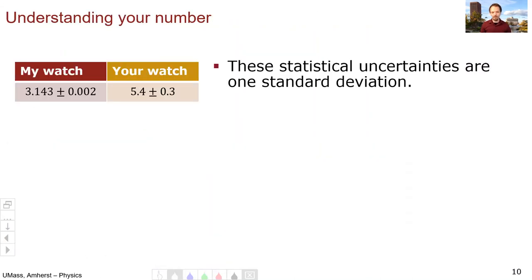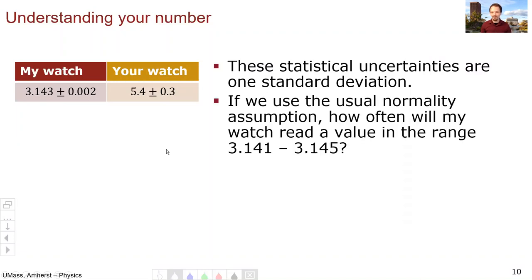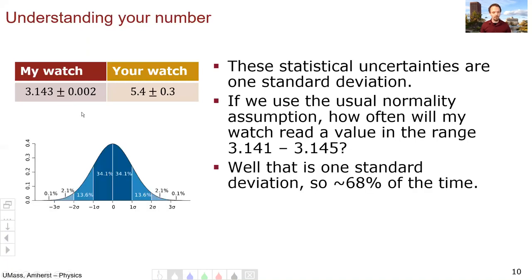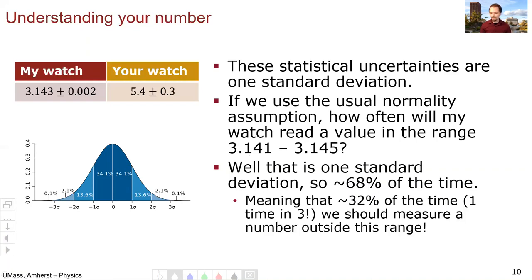Now let's think a little bit more about how we can understand these numbers. So these uncertainties, these statistical uncertainties are now measured and they're one standard deviation. So what does that mean? So if we use the usual assumption that our data follow the normal distribution, how often will my watch read a value in the range of 3.141 to 3.145? Well, 3.141 to 3.145, if my standard deviation is 0.002, then this range is one standard deviation. And so we expect that my measurements will fall in this range about 68% of the time, which means about 32% of the time, which is one time in three, right? Because 33% is a third, so one time in three, I should measure a number outside of this range.